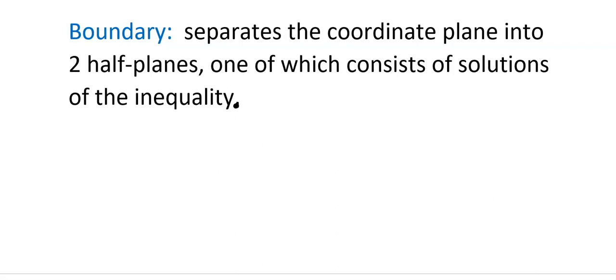The boundary is the actual line. If there is an equals with it, it's solid. If there's not, it's dotted. What that means is the points on the line are included when there's an equals. They're not included when there isn't an equals. If you plug a point in that's on the dotted line, it makes it false.